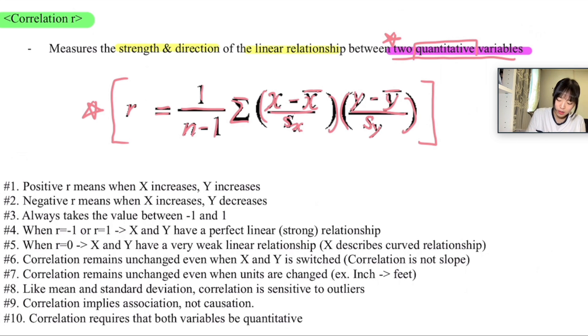So the first one is that positive r means when x increases, y increases. Let's color that in a different way. So positive r means when x increases, y increases. It's very easy because it's positive, right? They have a positive relationship. When x and y are changing in the same direction, we're going to say that they have a positive correlation or positive r.